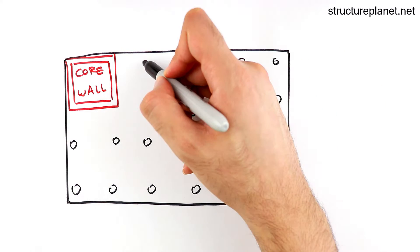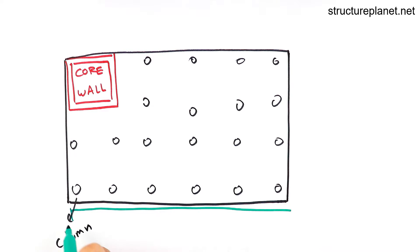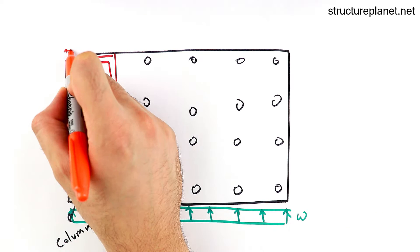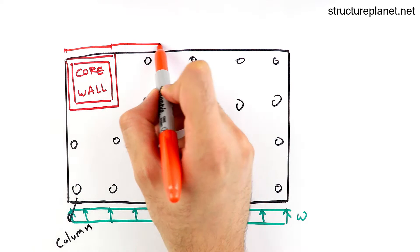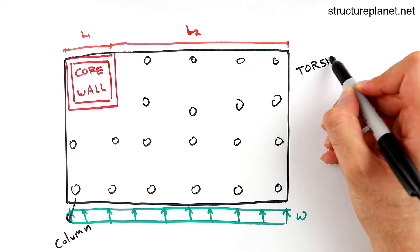these loads while traveling to the core wall will create high torsional moments in the lateral system and will probably cause large deformations at the corners of the building as well. This effect can be reduced by having multiple lateral elements at opposite corners of the floor plan or by moving the core wall closer to the center of the floor.